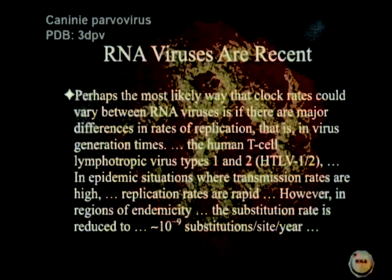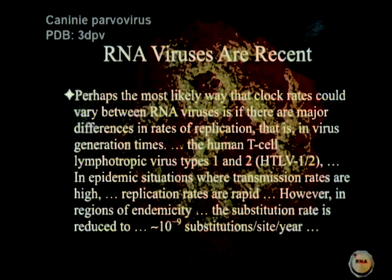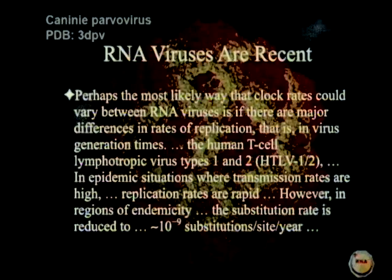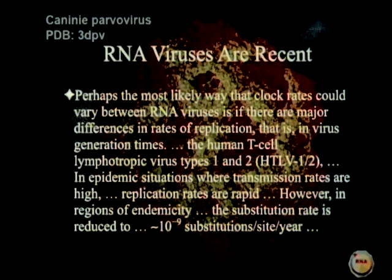Perhaps the most likely way that clock rates could vary between RNA viruses is if there are major differences in rates of replication — that is, in virus generation times. The human T-cell lymphotropic virus types 1 and 2 (HTLV-1 and 2) — discovered when researchers were trying to find HIV — in epidemic situations where transmission rates are high, replication rates are rapid. However, in regions of endemicity, the substitution rate is reduced to about 10 to the minus 9 substitutions per site per year, which is the human substitution rate. Apparently the reason is that the virus gets incorporated into infected cells' DNA and then stays that way — when incorporated into the DNA, it doesn't change significantly.